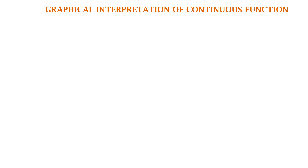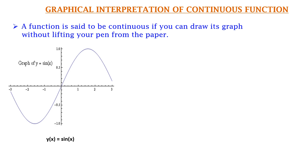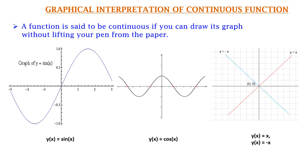Graphical interpretation of continuous functions: a function is said to be continuous if you can draw its graph without lifting your pen from the paper. For example, take the graph of sin x — you can easily draw this graph without lifting your pen. Similarly, the graphs of y = cos x, y = x, or y = -x can all be drawn without lifting your pen from the paper.